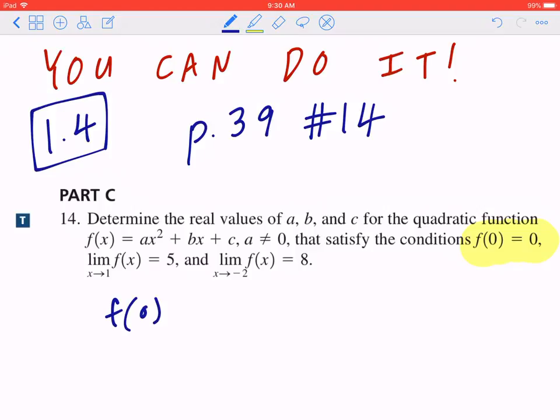What that means is you can go back and plug in x to be zero. So the fact that f of x is given to you as ax squared plus bx plus c, this means when you plug in x to be zero, that's going to be a times zero squared plus b times zero plus c.